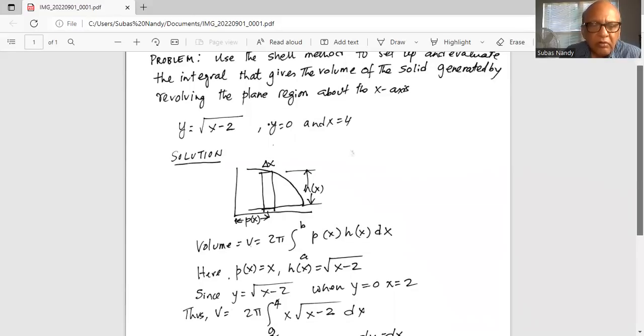Now y is given by square root of x minus 2. So when y is 0, x is 2.